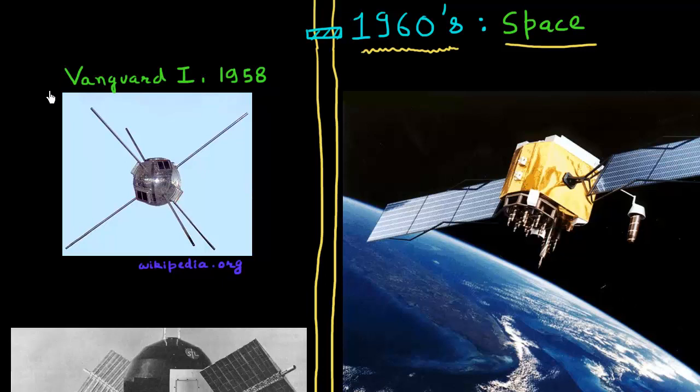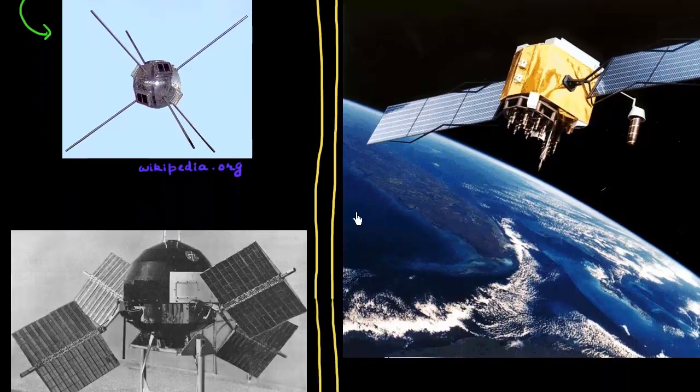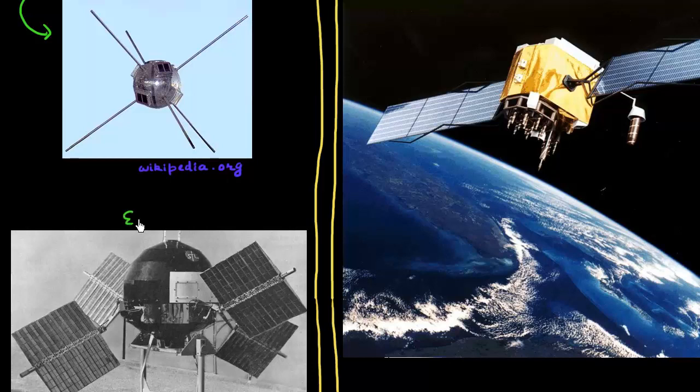This is the first satellite which was using solar cells, the Vanguard satellite, which was launched by US. This is another satellite, the Explorer satellite, Explorer 6, which was launched around the same time.